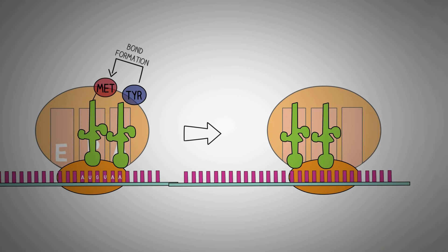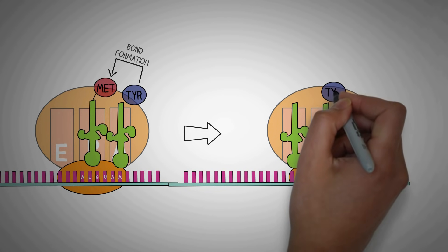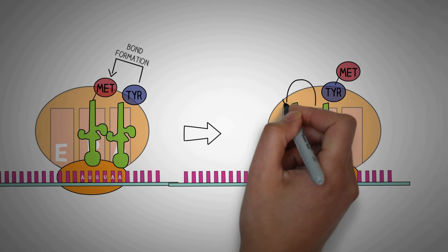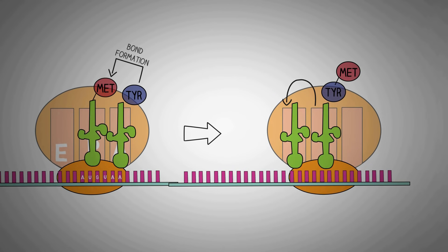After which, the ribosome moves and now you can see that the tRNA in the P site moves to the E site which is the exit site and the tRNA in the A site moves into the P site. The A site thus becomes empty and ready to receive the next tRNA.